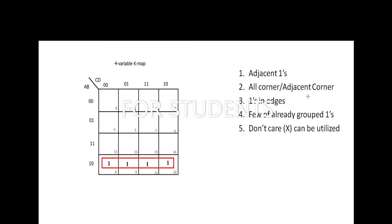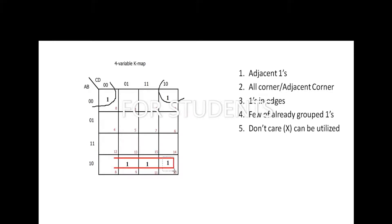Next, all corners. Suppose one is at this corner and another one here — these two corners are adjacent. If all four corners are one, we can utilize all four ones together. All corners can form a quad. However, we can only use adjacent corners — diagonal corners cannot be paired; only adjacent corners can form a pair or a quad.